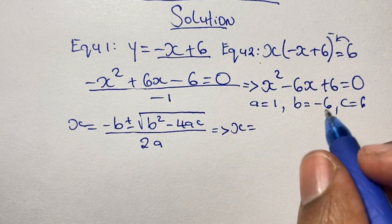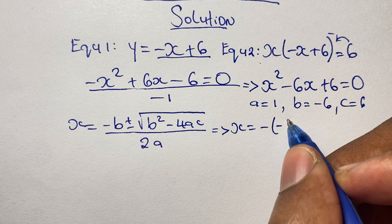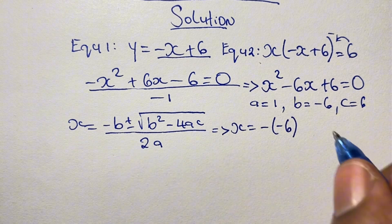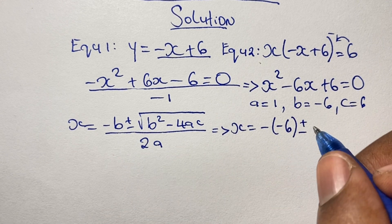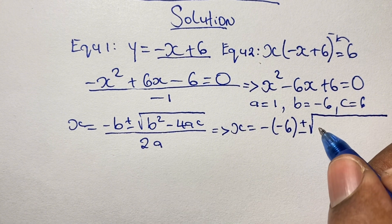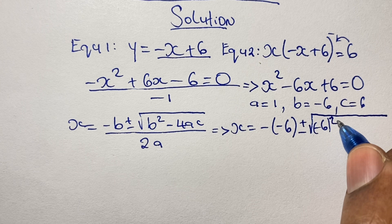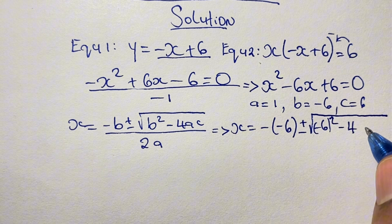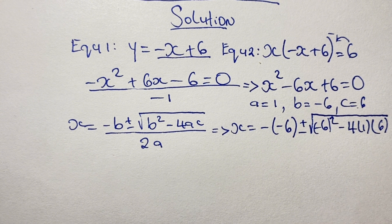So we have x is equal to negative of (negative 6), plus or minus the square root of negative 6 squared, minus 4 times 1 times positive 6. And we have that all over 2 times a, which is 2 times 1.